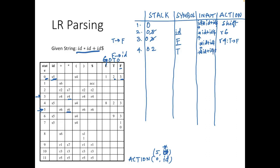Now the top of the stack is 2 and the current input symbol is *. We look up action[2, *] — it says s7, shift to state 7. On a shift, we push the new state onto the stack, so the stack is now 0, 2, 7. The current input symbol * is moved to the symbol part.